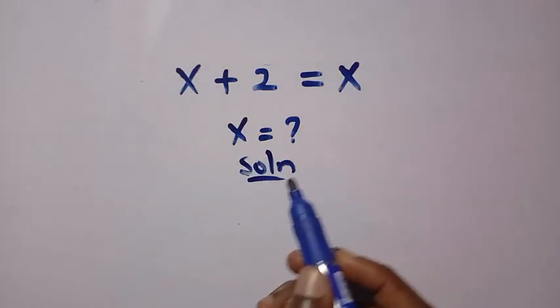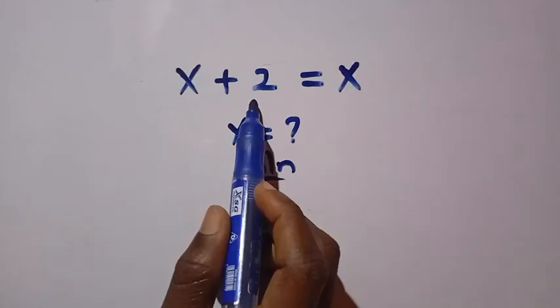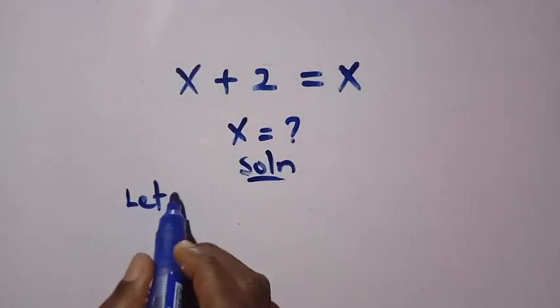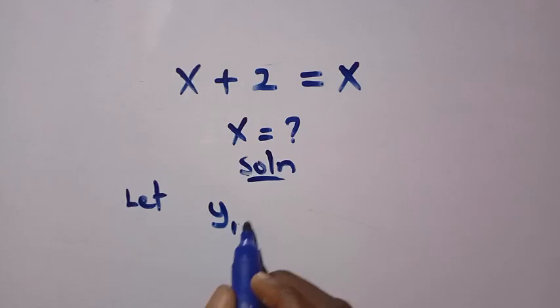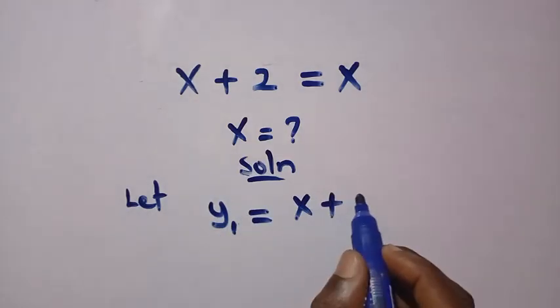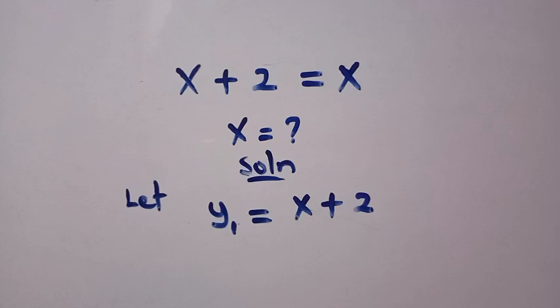Graphically, there are two sides here. We have x plus 2 and here is x. Suppose I let, if I let y1 equals this side which is x plus 2. And we have the other one which is y2 equals x.